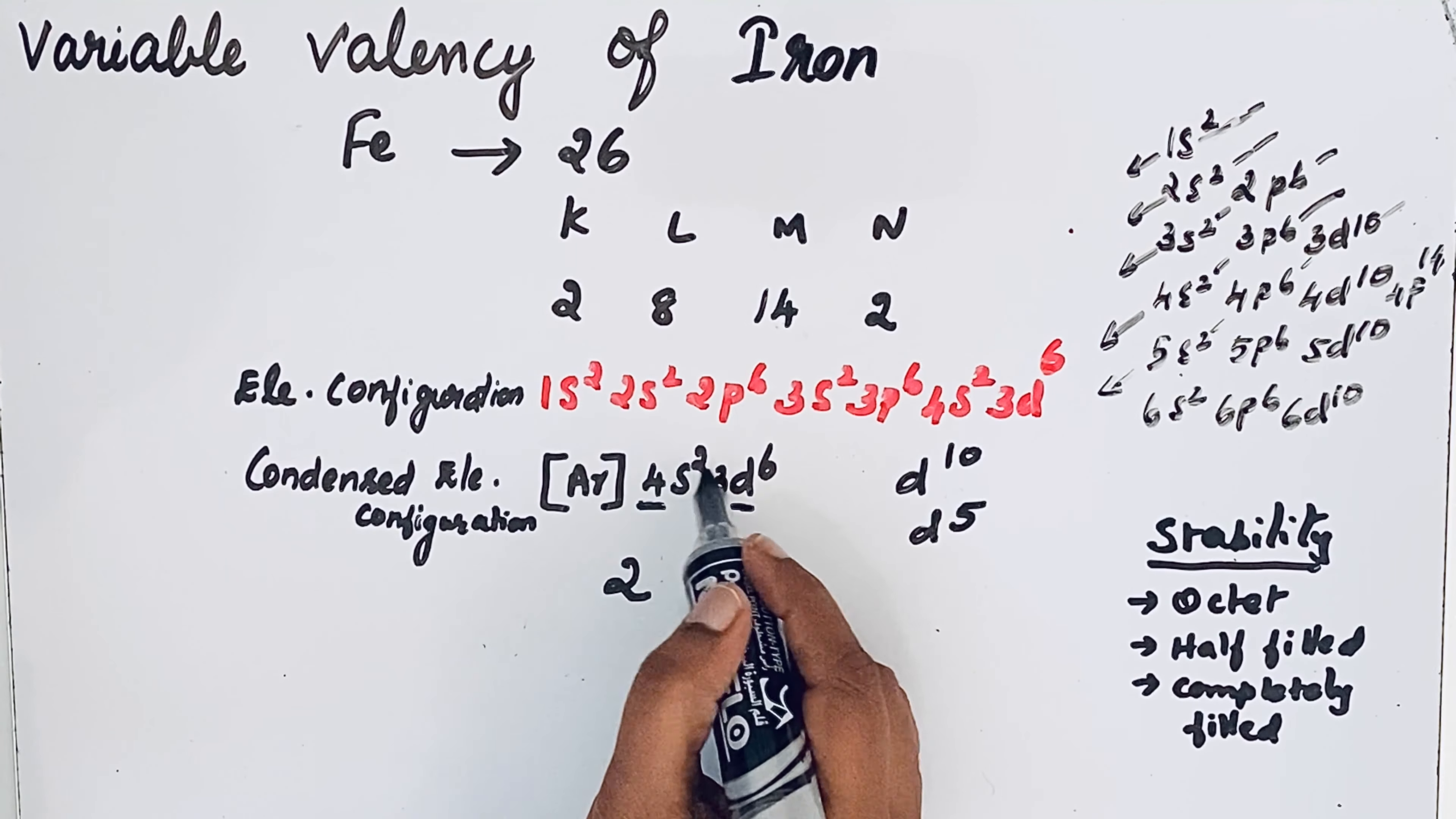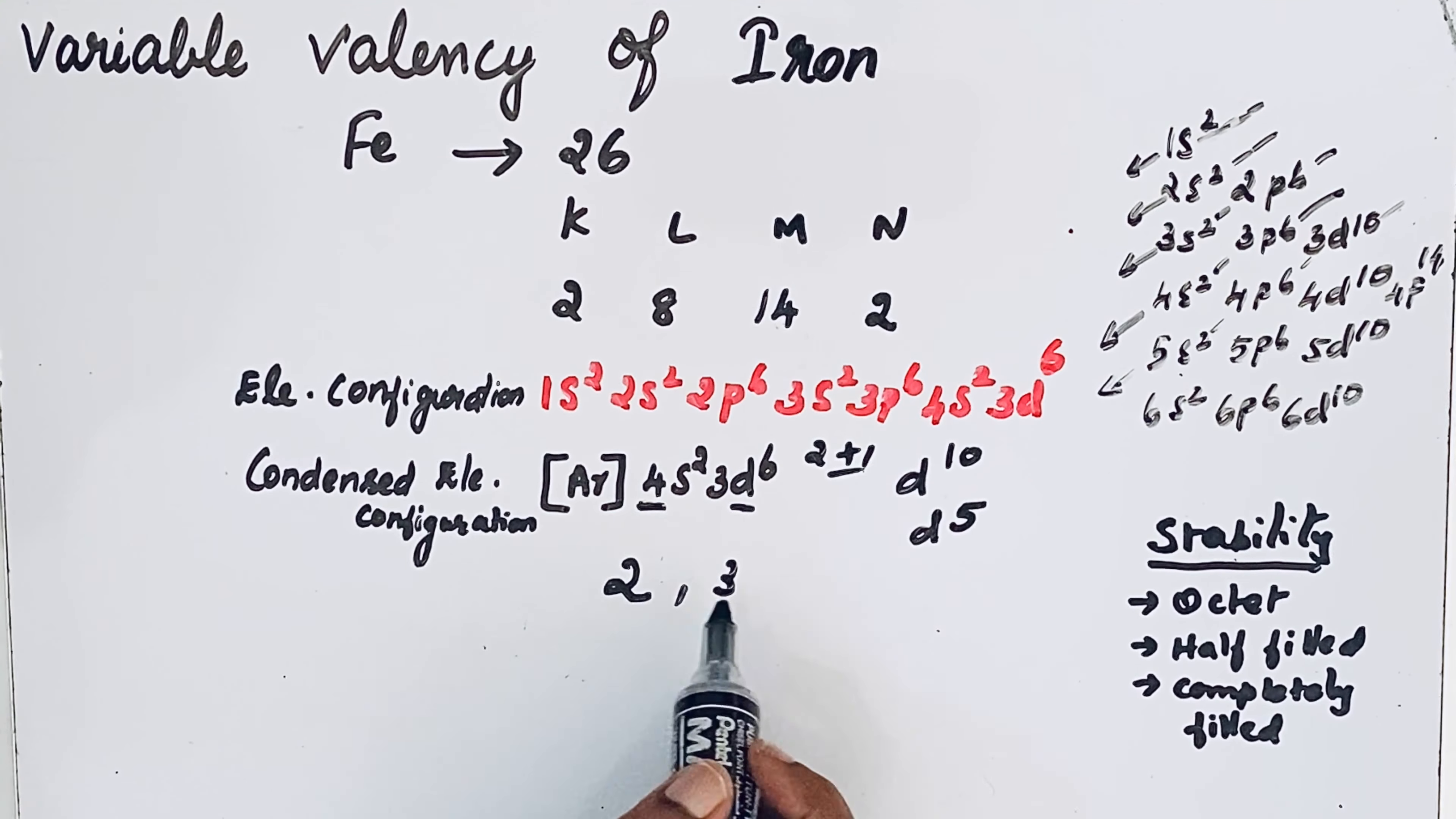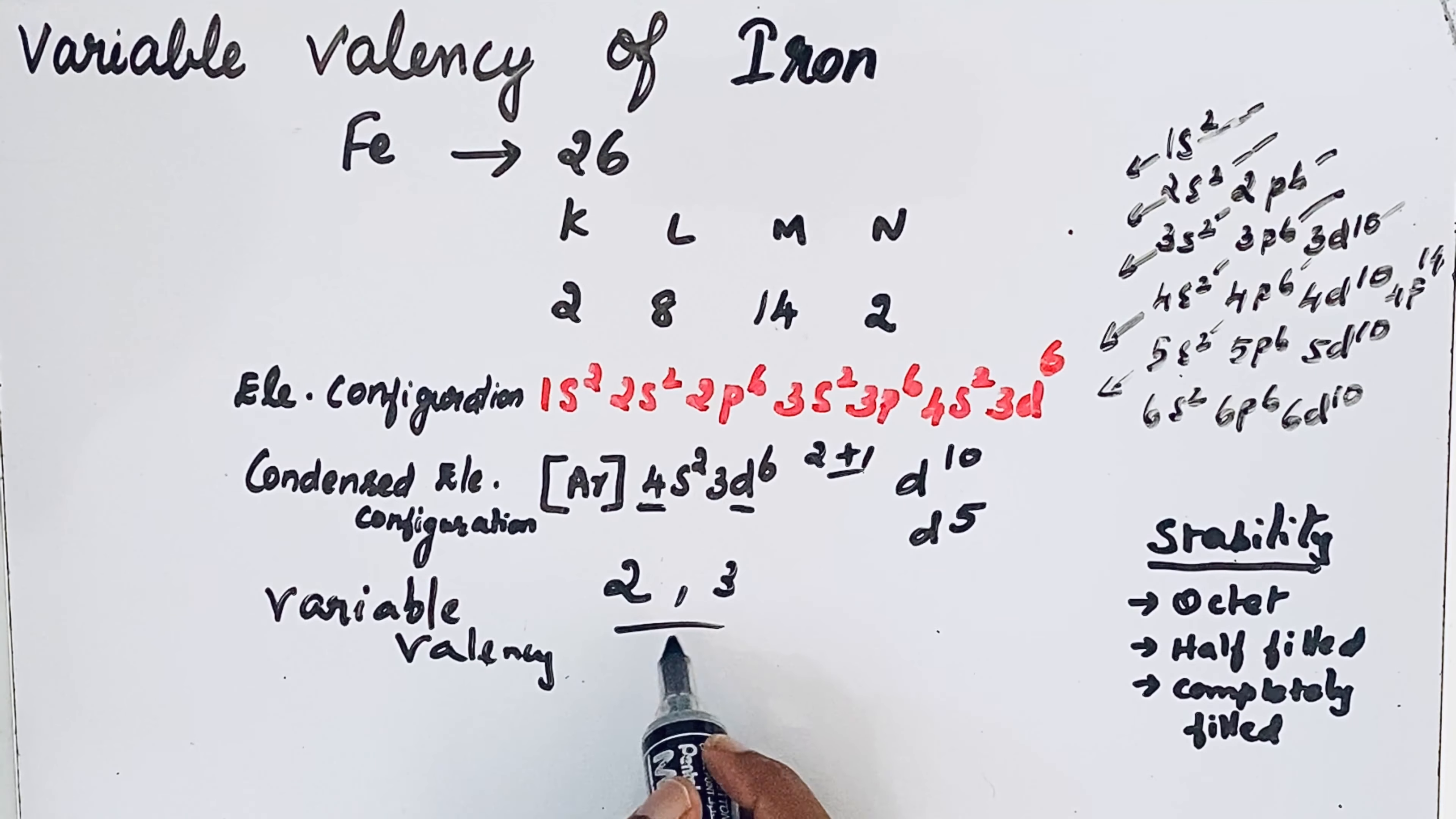From here 2 electrons and from here 1 electron. So 2 plus 1 equals 3. That is why iron has valency 2 and 3. This kind of valency is called variable valency. So valency of iron is 2 and 3.